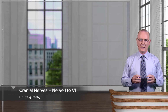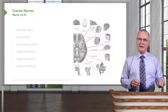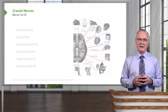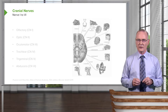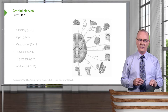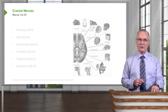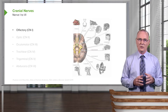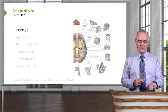Welcome to this presentation on the cranial nerves. In this presentation, you'll have a better understanding of six cranial nerves — nerve 1 through nerve 6 — and you'll have a nice understanding too of the clinical considerations with each of those cranial nerves. We'll take a look at the cranial olfactory nerve, cranial nerve number 1.